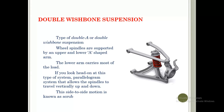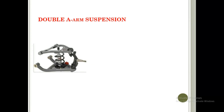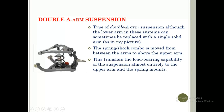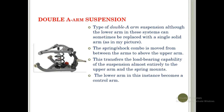Side-to-side motion in this system is known as scrub. In another variant of the double A-arm suspension, the lower arm can sometimes be replaced with a single solid arm. The spring and shock absorber combo is moved from between the arms to above the upper arm. This transfers the load-bearing capacity of the suspension almost entirely to the upper arm and spring mount, and the lower arm becomes a control arm.